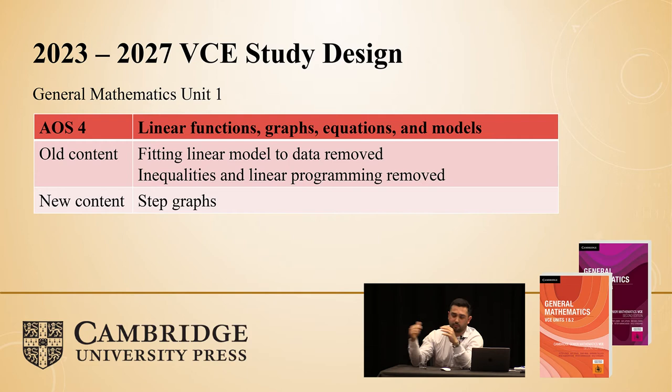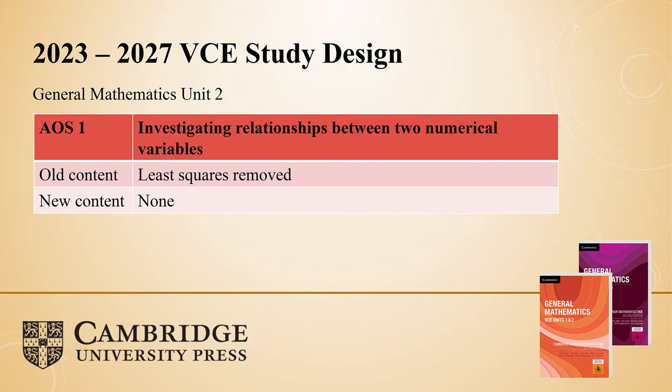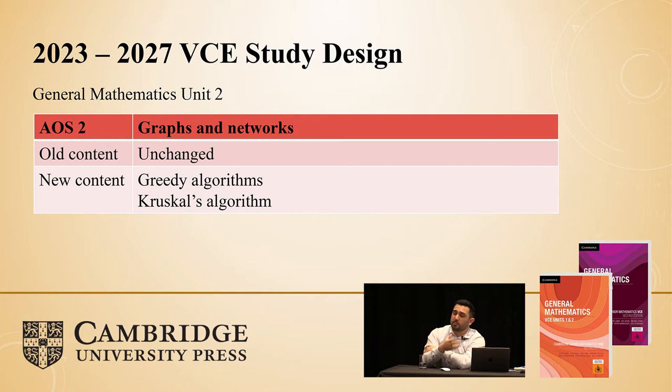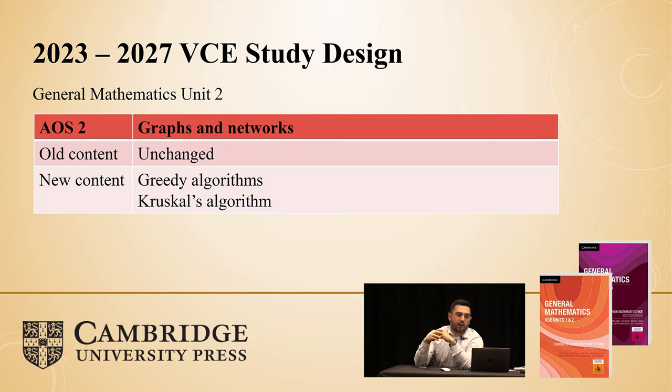Looking at data analysis moving into unit two, we can see that least squares has been removed as a formal investigation, but there's no other new content in the second data analysis topic visited in semester two. Graphs and networks — for some people in the room, this might actually be a new topic we need to become familiar with over the next few months to start teaching in year 11 next year. For those who have been teaching networks in year 11, there is no change in terms of old content. However, the idea of greedy algorithms has been explicitly defined in the study design.